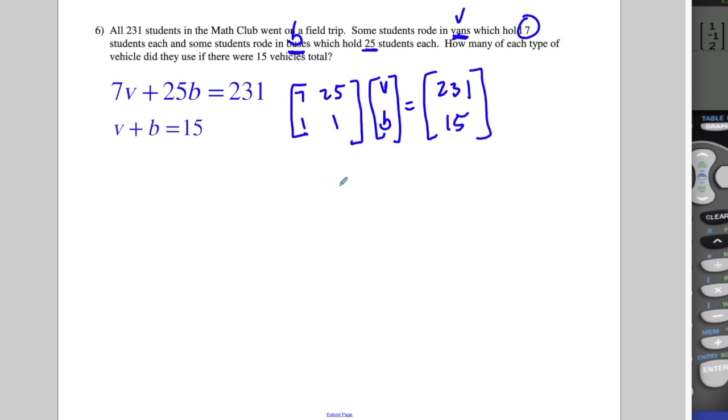And then I would have equals 231 and 15. To solve this, this is A, that's X, and that's B. I want to do X equals the inverse of A times B. And that's how you would take care of that.